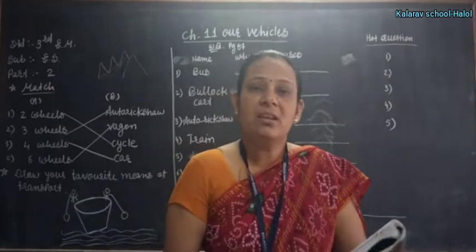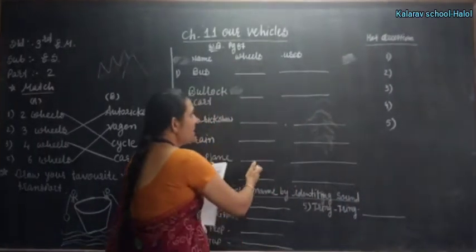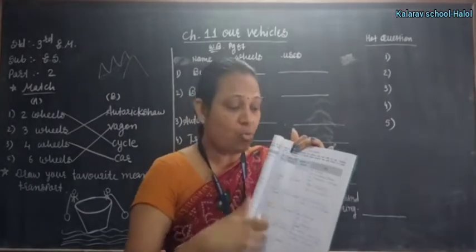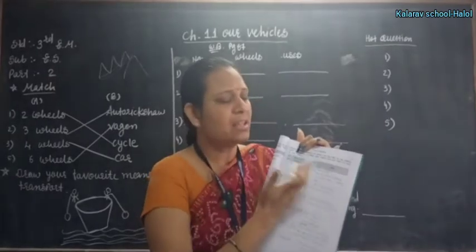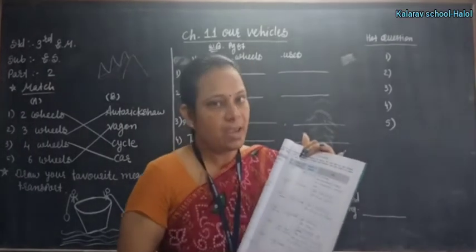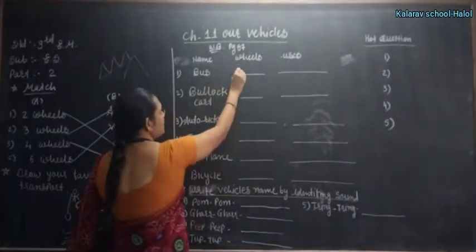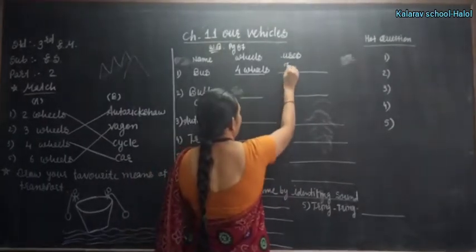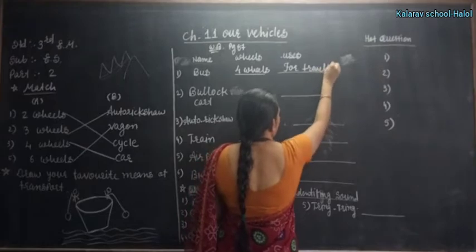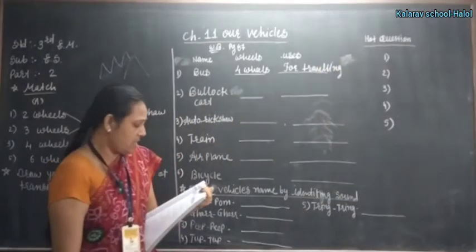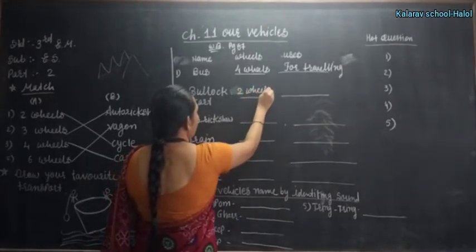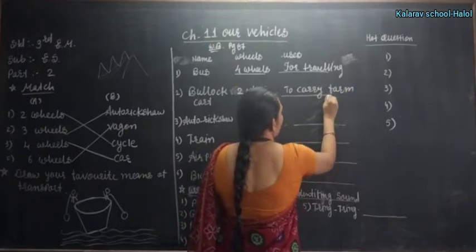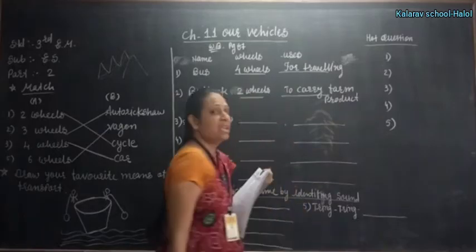Now here vehicles are given, and you have to write how many wheels and what is the uses. This type is asked in examination also. Bus: how many wheels? Four wheels. And it is for travelling. Bullock cart: two wheels, to carry farm products and for travelling also.